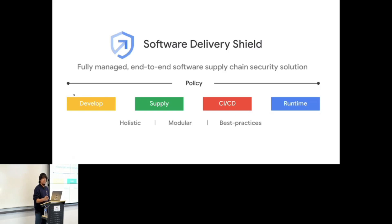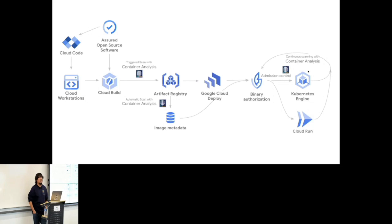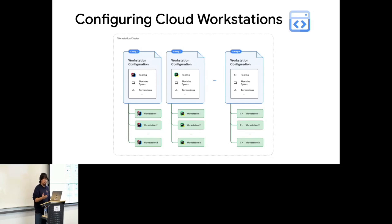The Software Delivery Shield covers the full pipeline — develop, supply chain, CI/CD, and runtime — but Cloud Workstations is specifically the development side. To configure a workstation there are several concepts: first is the workstation cluster, which is a logical group defining VPC, subnet, and so on. Within a cluster you can create one or more configurations. Each configuration lets you specify the IDE — such as IntelliJ — and the machine spec. Java developers might need high-memory instances, while Go developers need less.